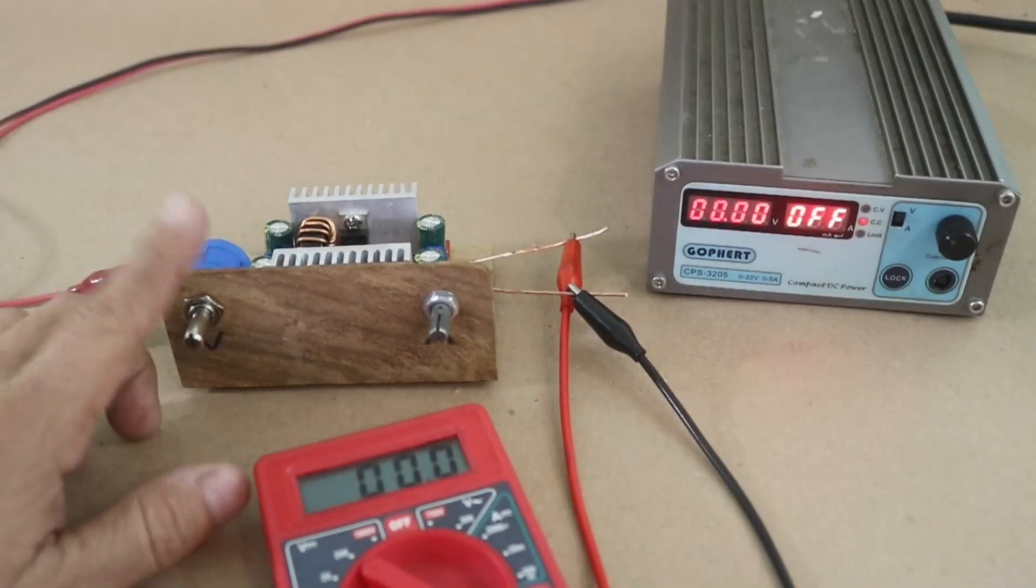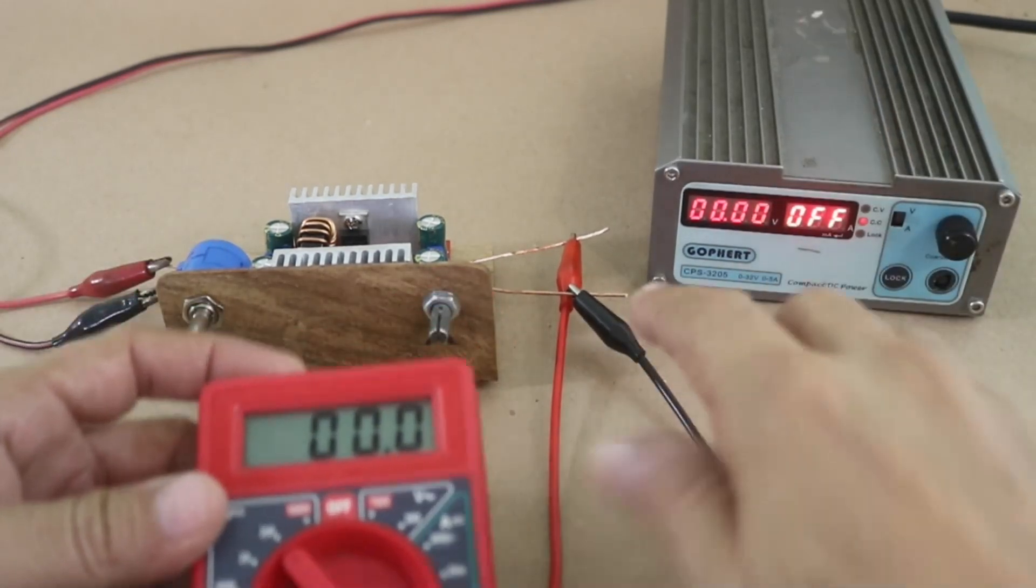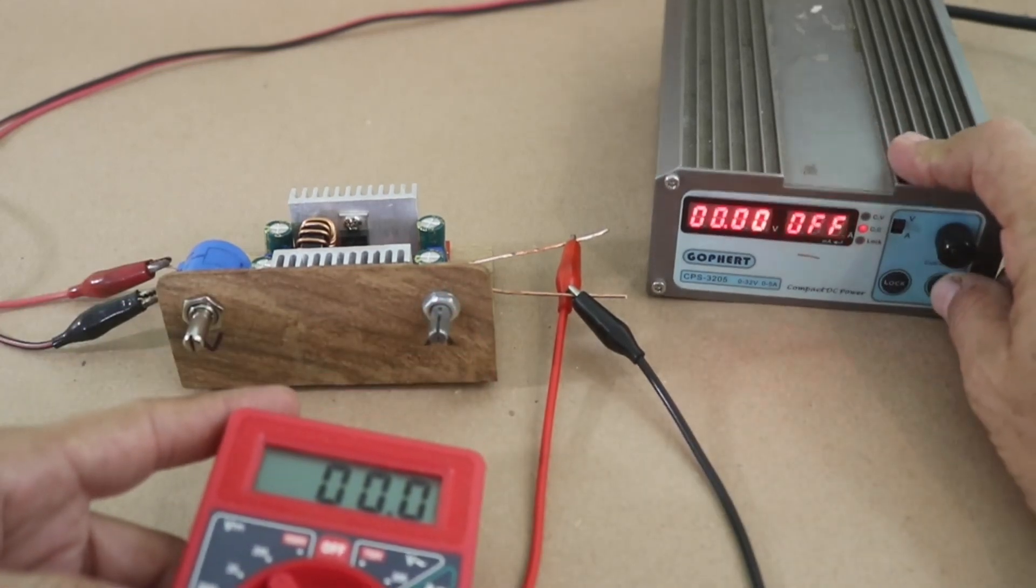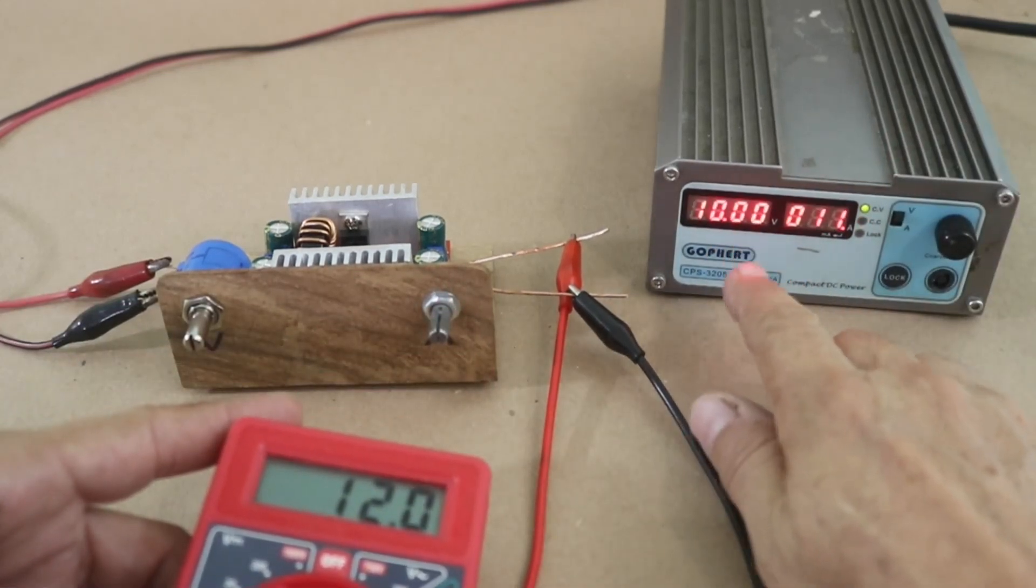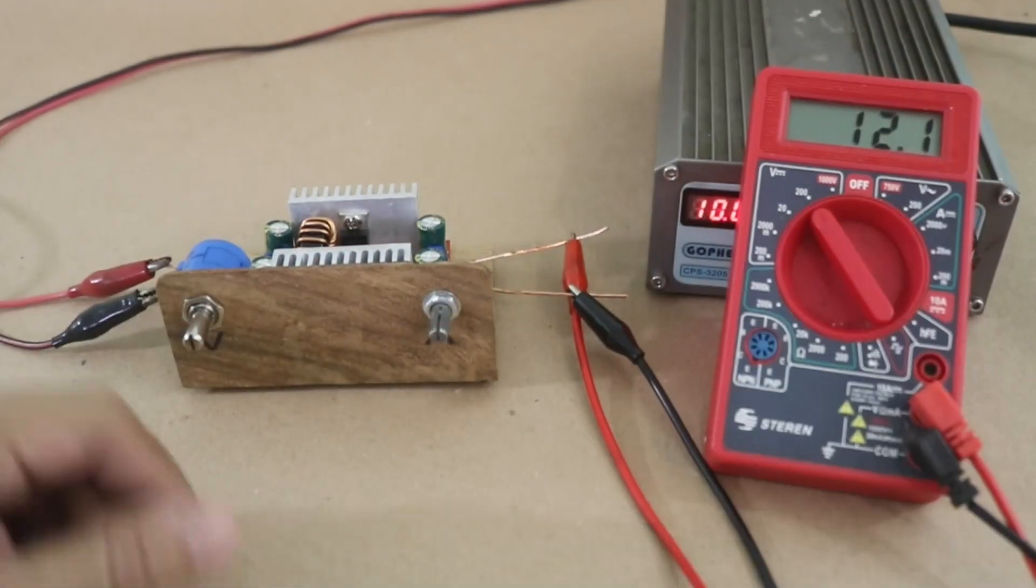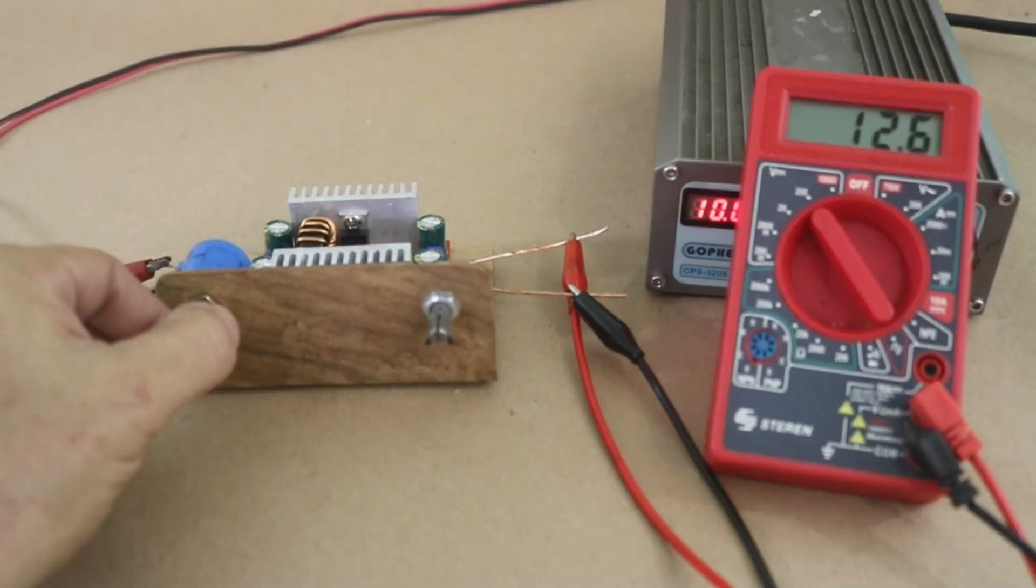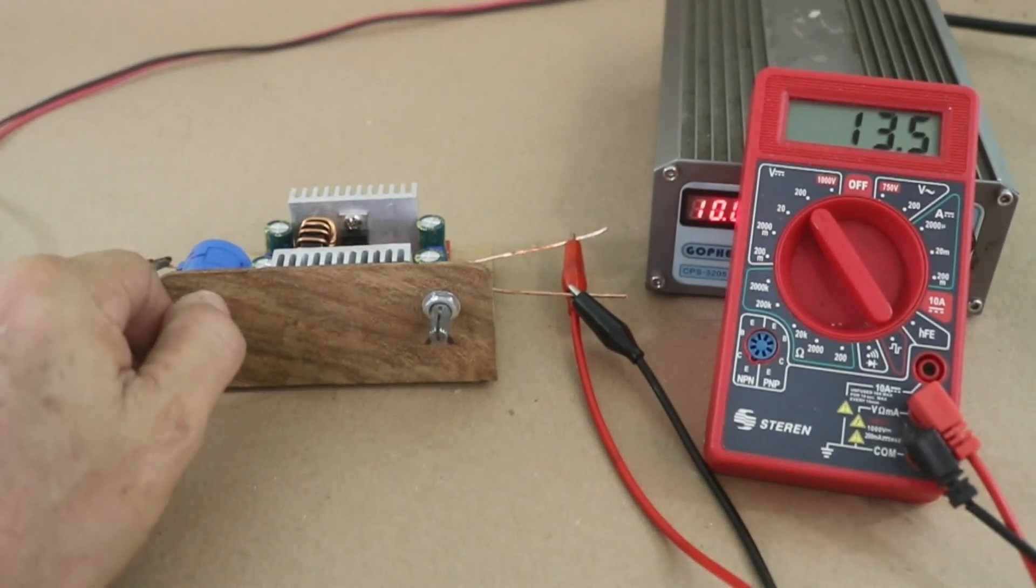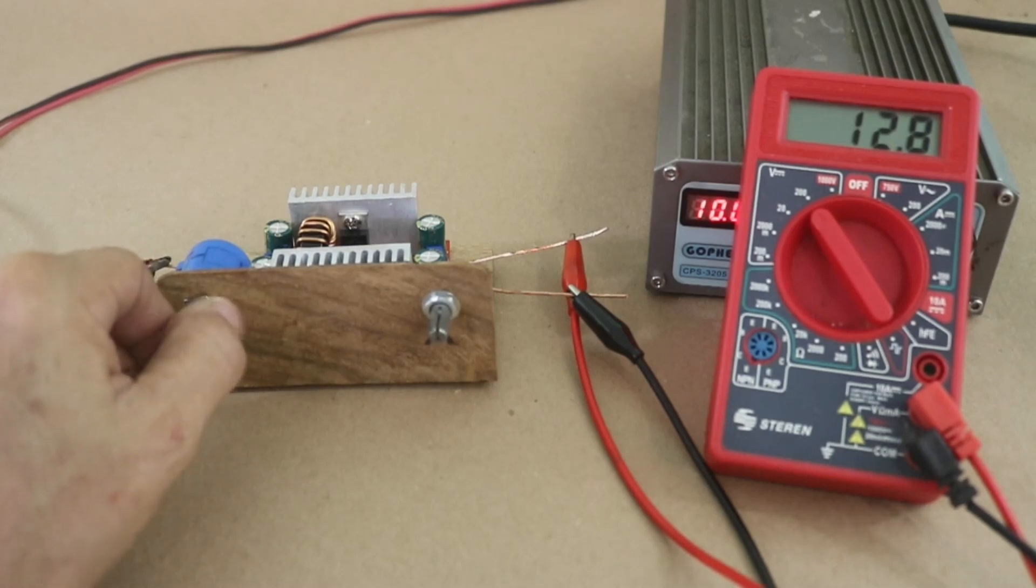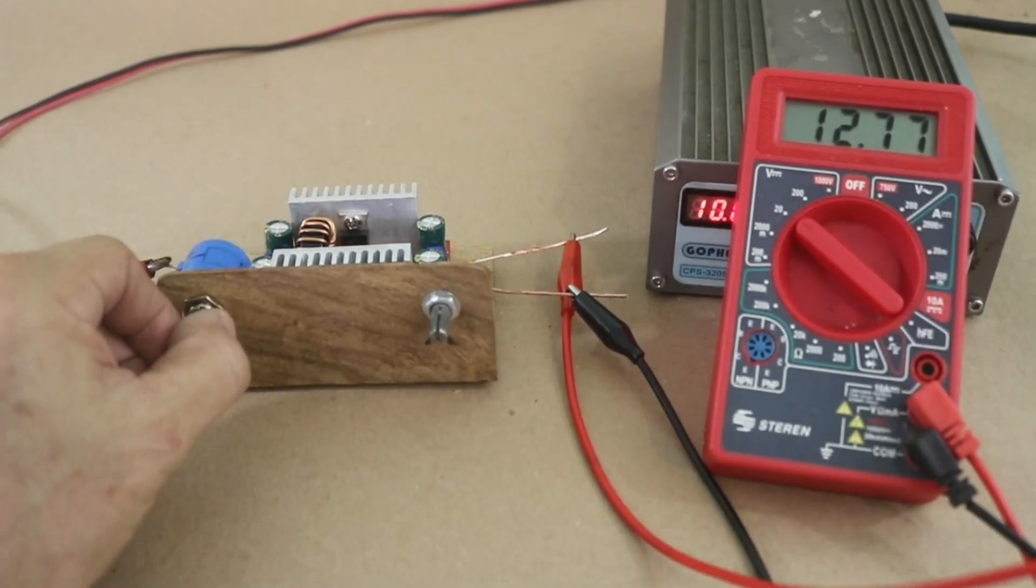The step-up module is connected to the power supply, and we have the multimeter to check the output voltage. Let me turn on the power supply. 10 volts input voltage, and we can see that we have 12 volts at the output. And, we can set it to any value we want, up to 60 volts maximum, using the potentiometer. As you can see, we can fine adjust the voltage, because we have the multi-turn potentiometer.